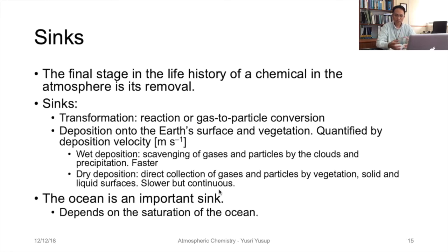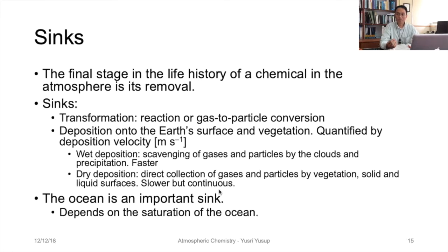Deposition can be further categorized into two types: wet deposition and dry deposition. Wet deposition is where gases or particles are scavenged by clouds, precipitation, or rain, and this process is much faster than dry deposition. Dry deposition is the direct collection of gases and particles by vegetation and solid or liquid surfaces. It is slower than wet deposition, but it is more continuous and happens consistently across spatial and temporal scales.